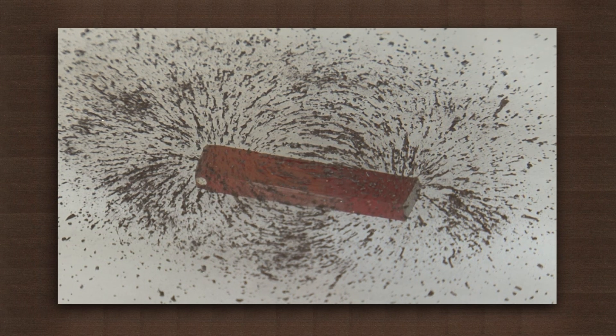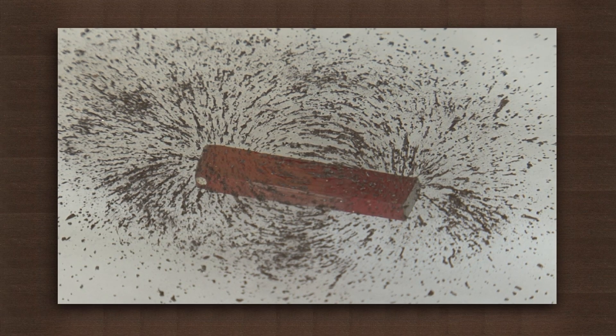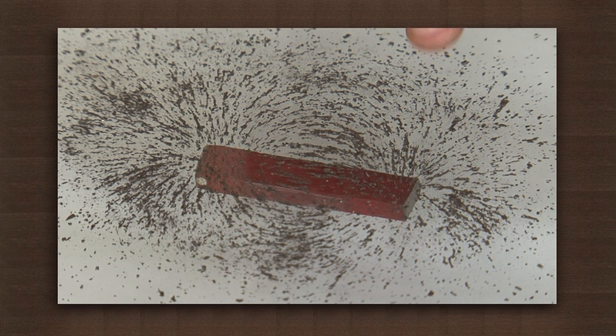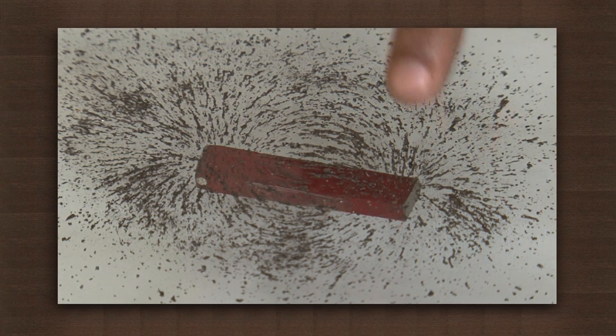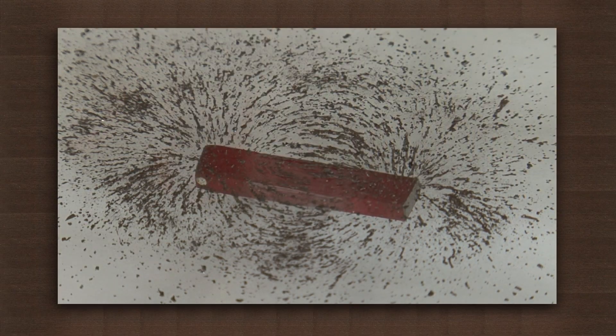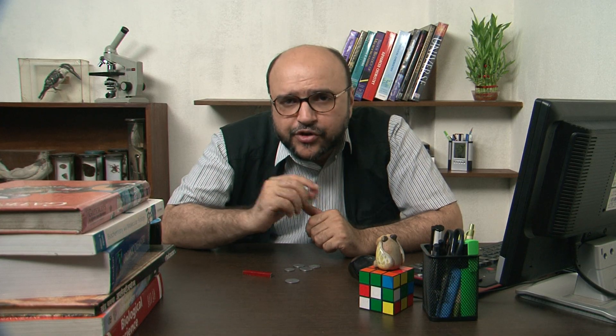These curved lines originate from one end of the magnet and terminate at the other. Also observe that the concentration of the lines is more at the poles of the magnet. Most of the lines run from one pole to the other.